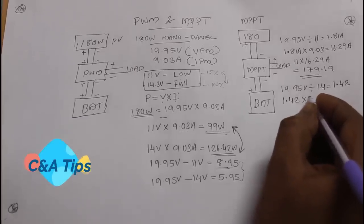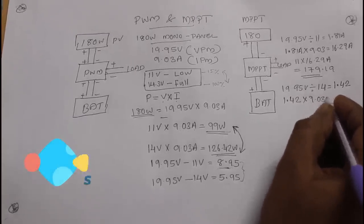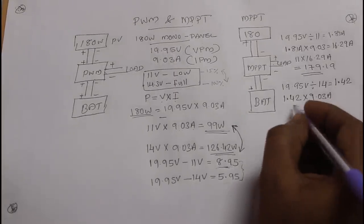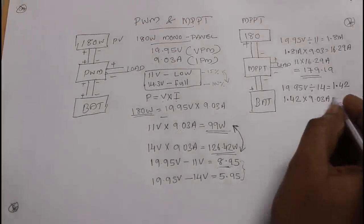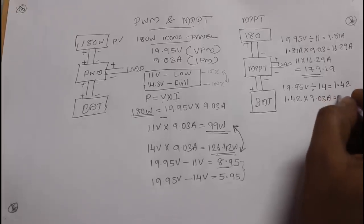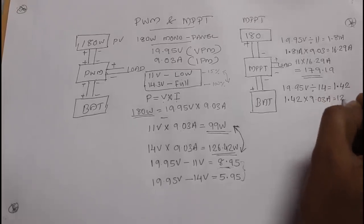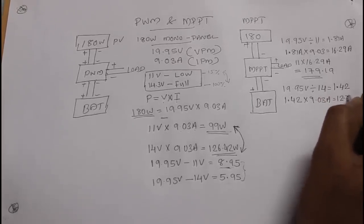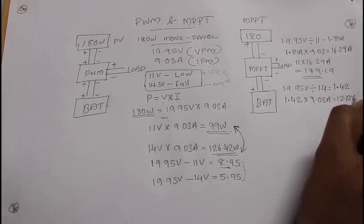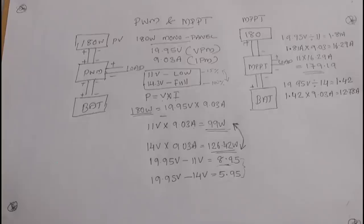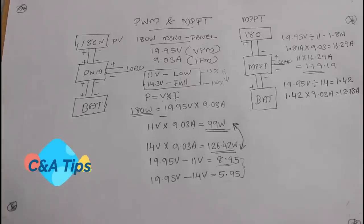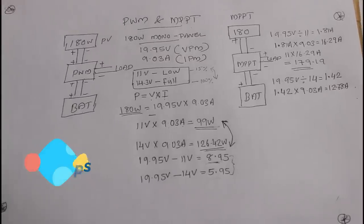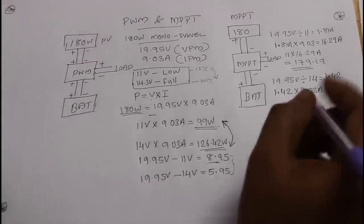With the ratio of 1.42 applied to the 9.03 ampere current, we get approximately 10.78 amperes. That is the effective current output when using the MPPT controller at 14V full charge voltage.